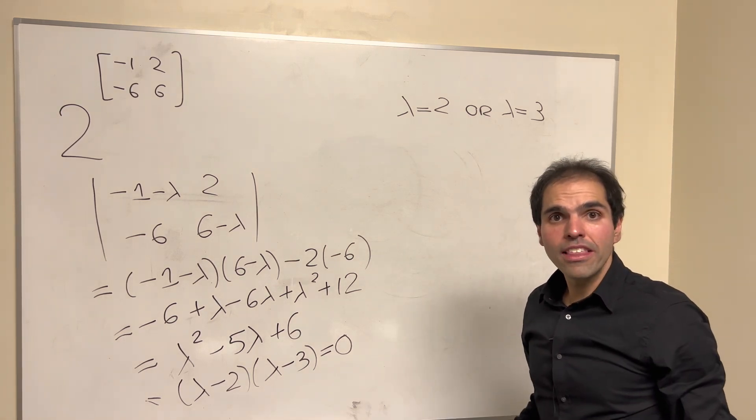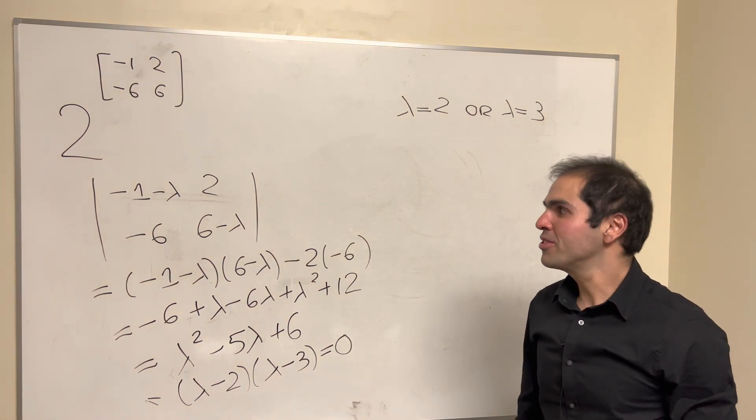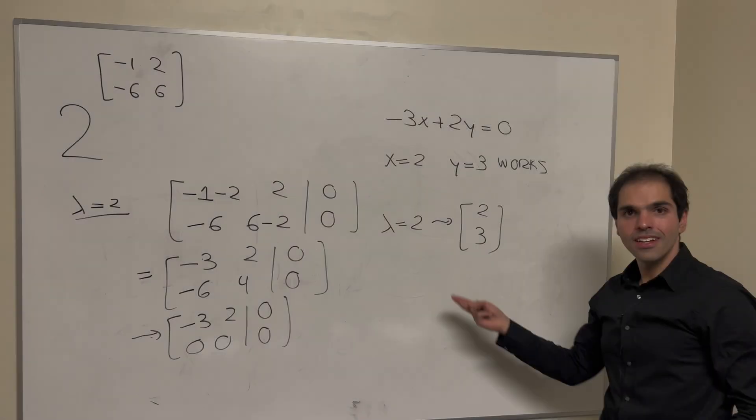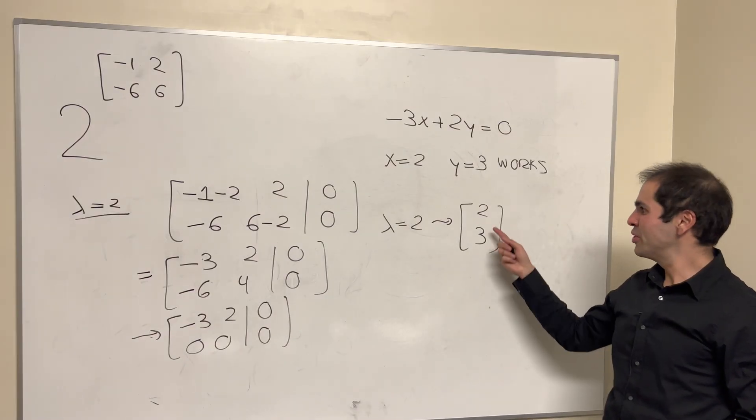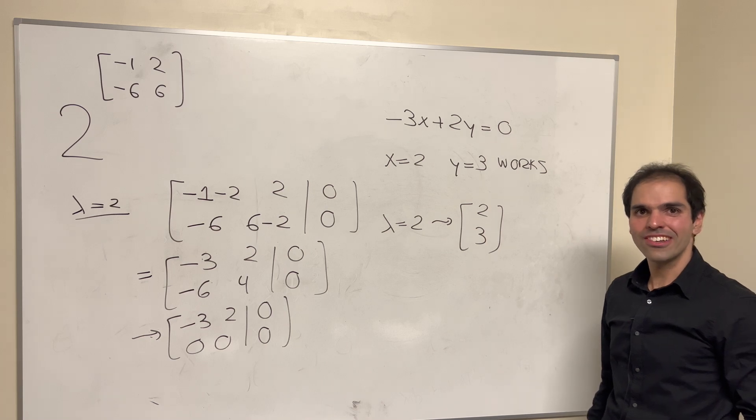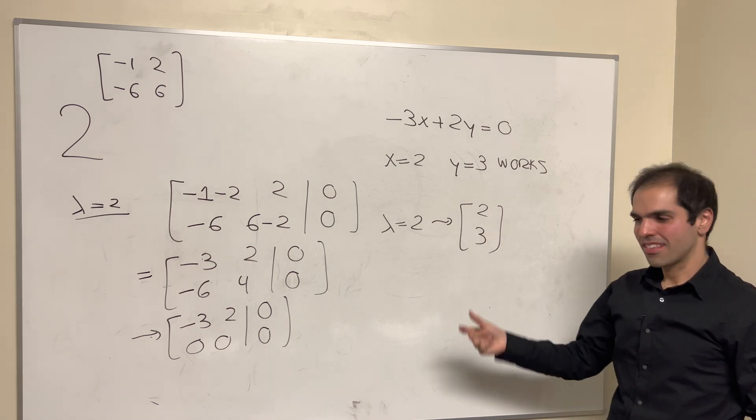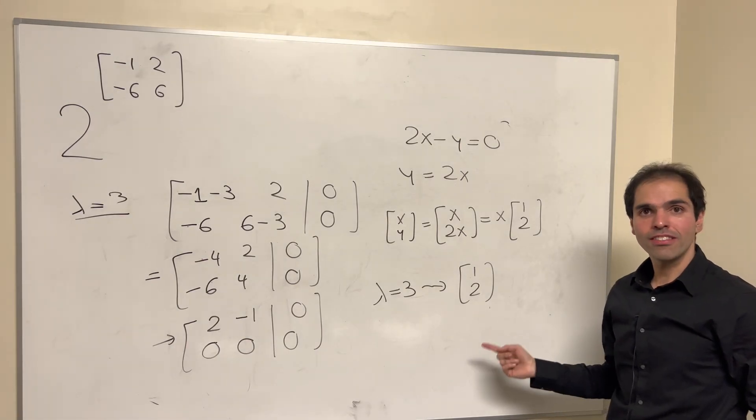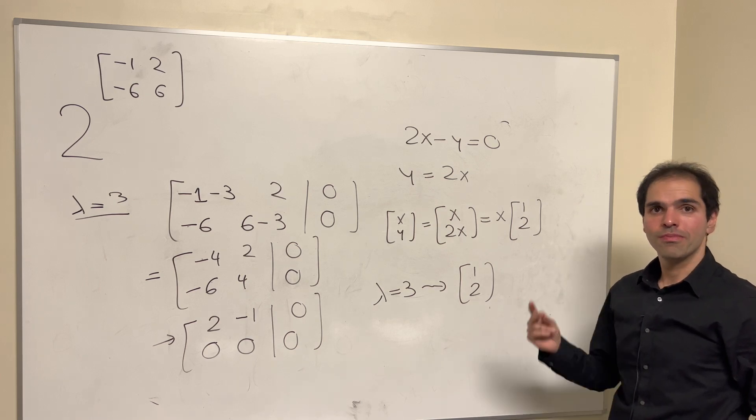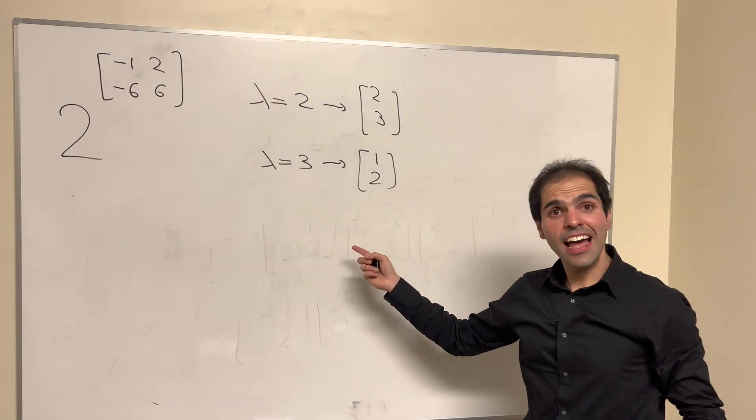And from this, we can get the eigenvectors. If you're curious, here are the details. This is for lambda equals 2, where a corresponding eigenvector is 2, 3. And this is for lambda equals 3, where a corresponding eigenvector is 1, 2. So what does that tell you?